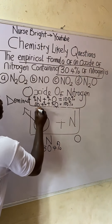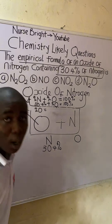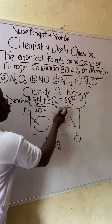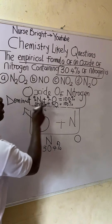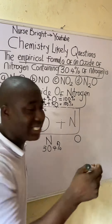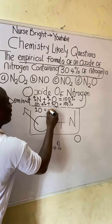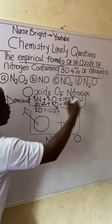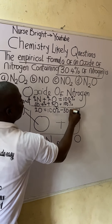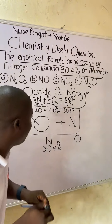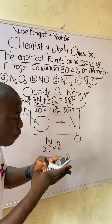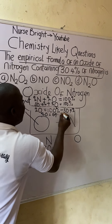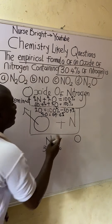Make percentage of oxygen the subject of the formula. The 30.4 percent crosses the equality sign and becomes negative, so percentage of oxygen equals 100 minus 30.4 percent.